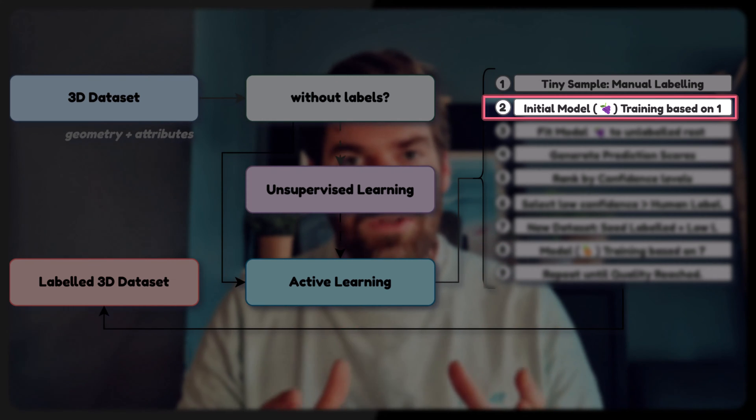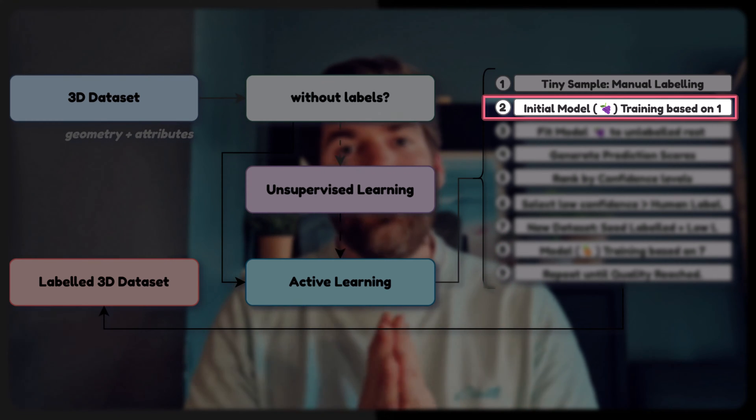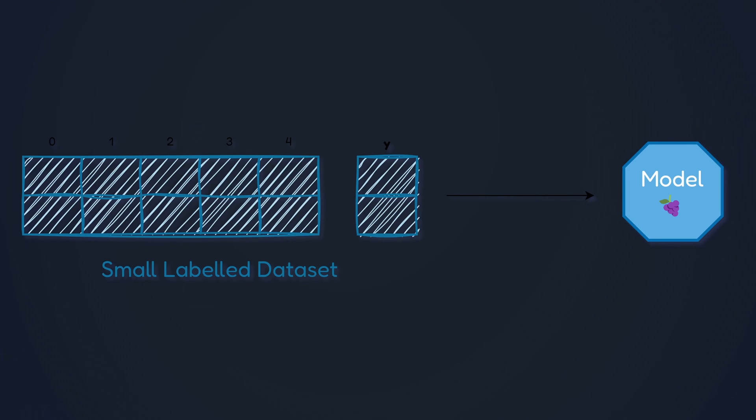The second stage is to initialize a model based on the labeled data, which constitutes your training dataset. You train a model that we will use later on. As you'd expect, because you have a very limited amount of samples, the model performance won't be at its peak — it will definitely be overfitting — but that's okay at this stage.